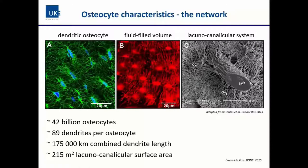Other astonishing facts about osteocytes in the human body: we estimate approximately 40 billion osteocytes, making it a major cell type in bone tissue. We assume about 89 dendrites per osteocyte in humans, which combined creates an enormous total dendrite length and lacuno-canalicular surface — truly a great active surface that osteocytes govern inside bone.